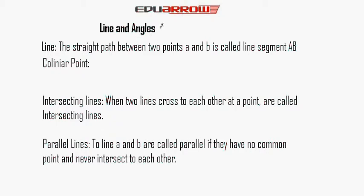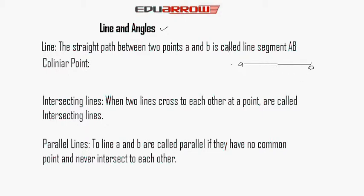Lines and angles — this is the new chapter. First, what is a line? The straight path between two points A and B is called a line segment AB. Suppose A and B are two points; when we join these two points to each other by a straight path, it is called a line.